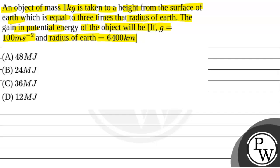First of all, we will see what will be the key concept used to solve this question. The key concept is that potential energy is given by U = -GMm/r. This is the gravitational potential energy where G is the gravitational constant, M is the mass of earth, m is the mass of the object, and r is the distance.